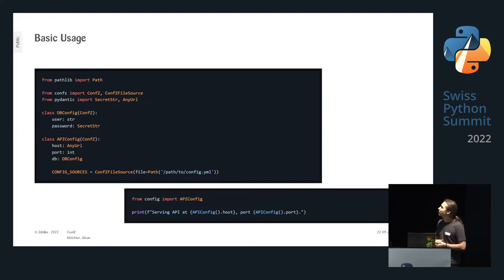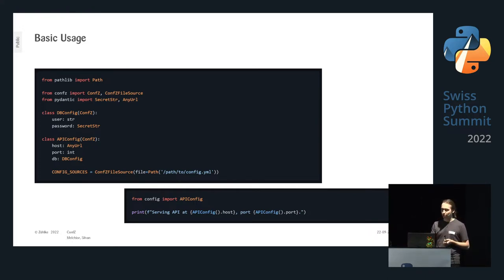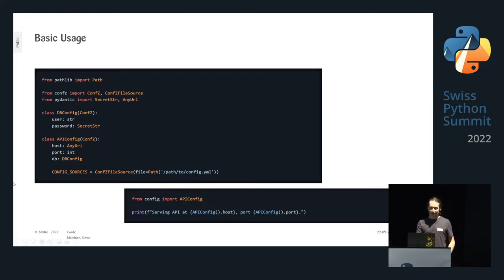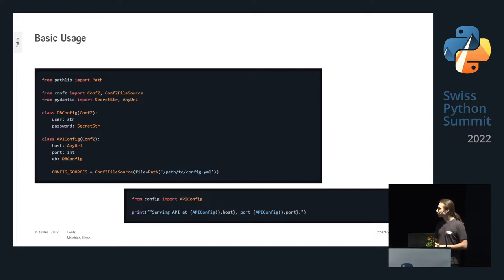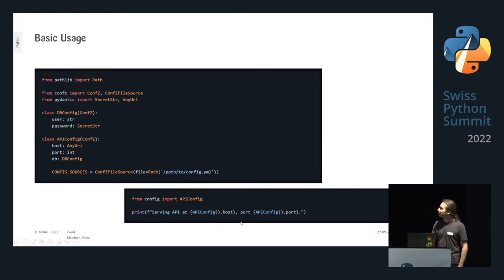In this example we code an API that runs at some host, has some port, and connects to its own database configured by the database config. So far this is plain pydantic. Now we add the class variable config_sources, where we define where this config is stored. In this example we say all this config is stored in a YAML file at path.config. That's all you need — from now on, wherever you are in your system, you can just import this config, instantiate it, and access the values.